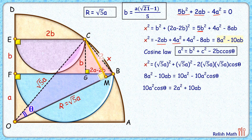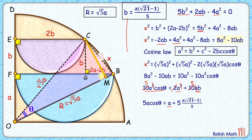Cancelling a from all terms, then dividing the full equation by 2, we simplify to get 5a·cos θ expressed in terms of a and b. Substituting b = a·(√21−1)/5 and cancelling a throughout, we arrive at cos θ = √21 / 5. Using the identity sin²θ + cos²θ = 1, we get sin θ = 2/5.